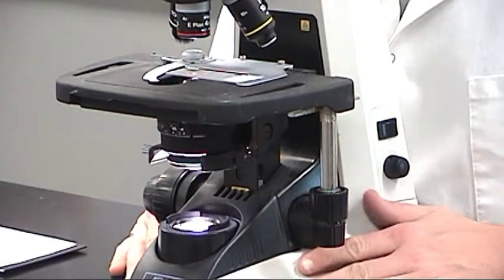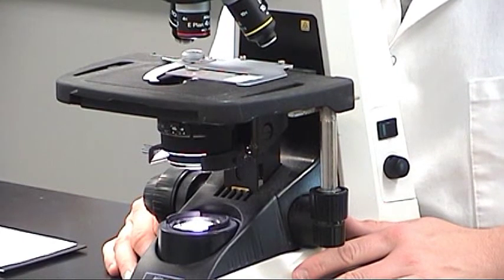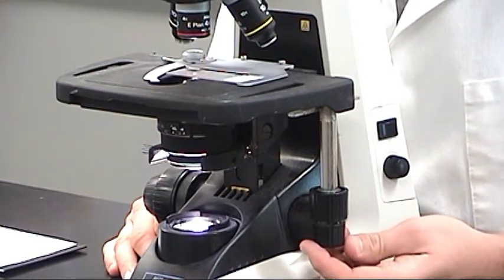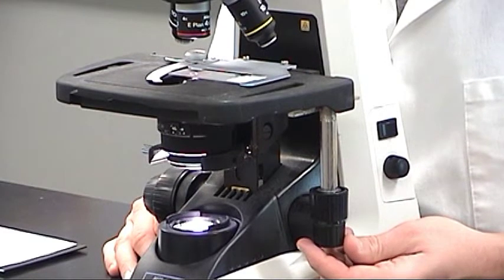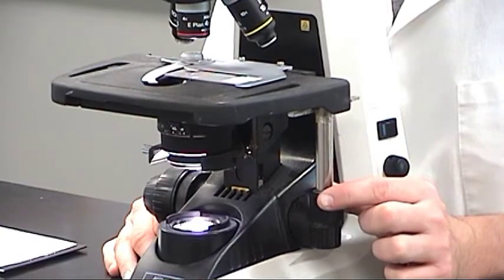The stage knobs move the stage. They commonly are called XY knobs and are mounted on a shaft at the left rear corner of the stage. The lower X knob moves the stage right and left. The upper Y knob moves the stage forward and back.